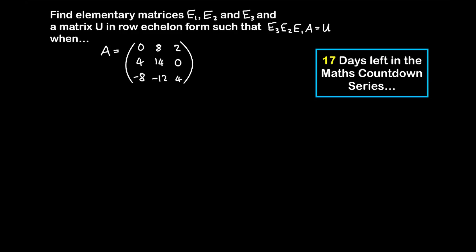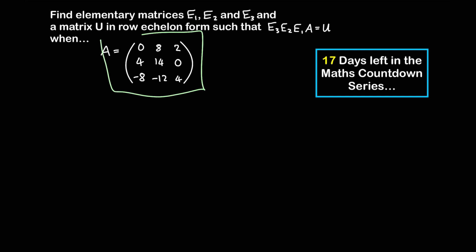Find elementary matrices E1, E2, and E3 and the matrix U in row echelon form such that this equation holds true when A is equal to this 3 by 3 matrix. What we are essentially trying to do is row reduce matrix A until we get a matrix in row echelon form by performing elementary row operations, which is the same as multiplying A by elementary matrices. We need exactly three elementary row operations, so we have to be careful not to use redundant or unnecessary operations.